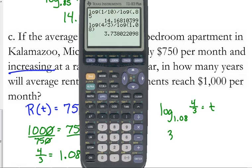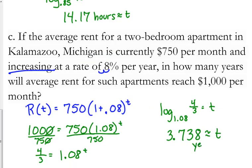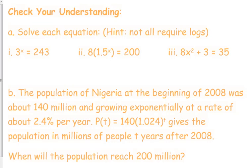Not very long. It's coming out just shy of 4 years. 3.73 years for the rent to increase by $250 per month. That's a lot. So, got a few more problems.